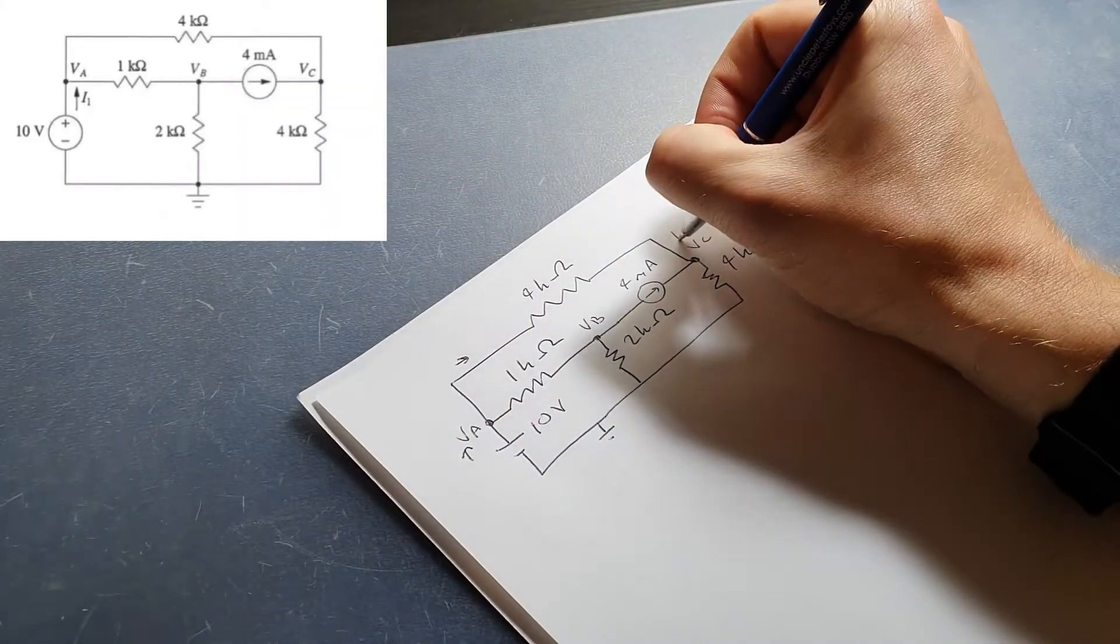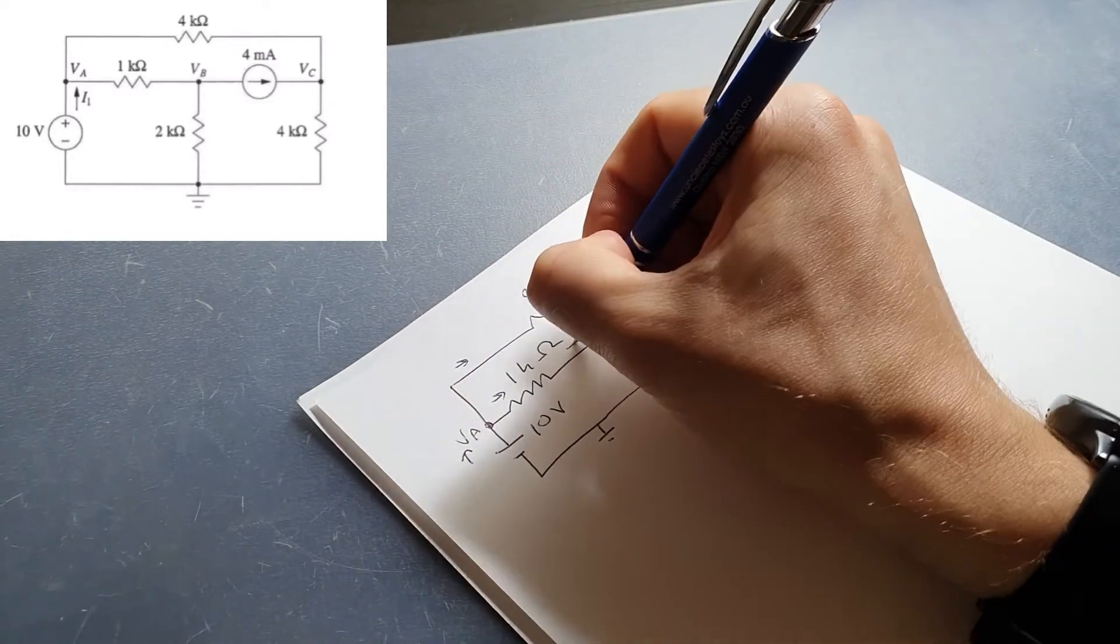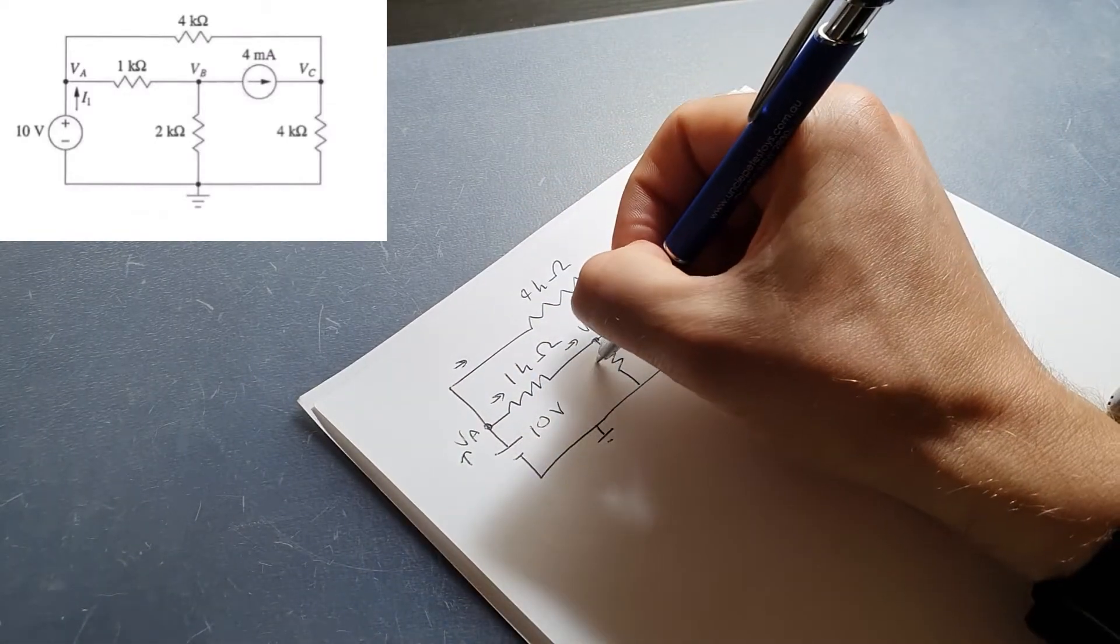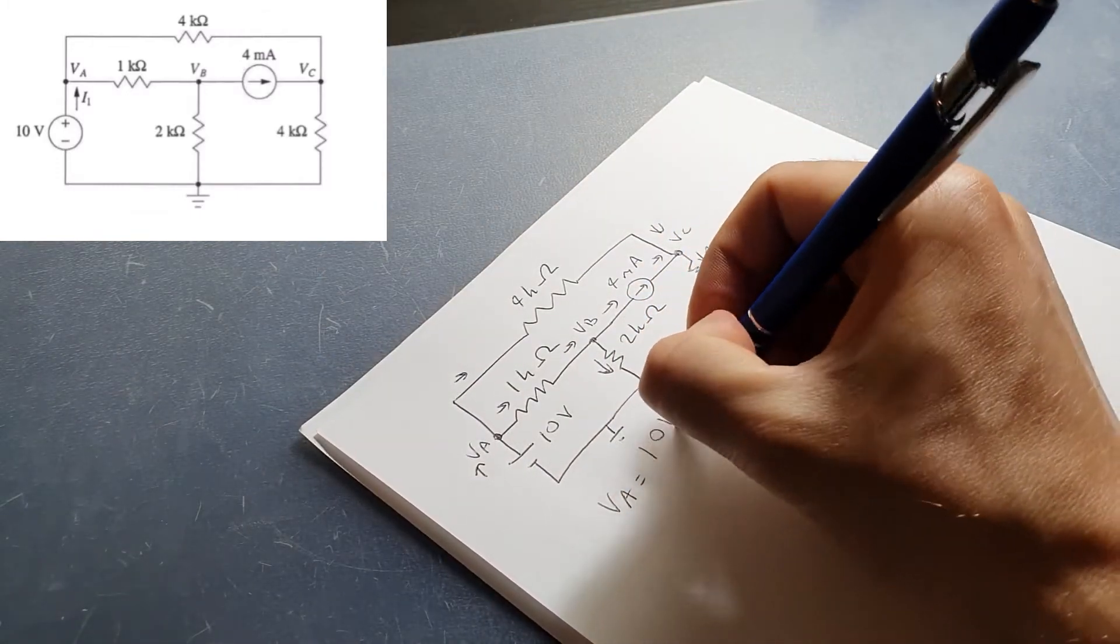Now we've got an equation in front of us. The first step is to label nodes and also pick a current direction. It doesn't matter which one, just take a guess, as long as you're consistent when you're solving the question. If you get a sign that's the wrong way around, all that means is you guessed wrong.